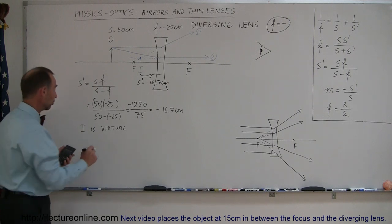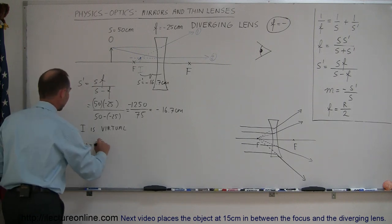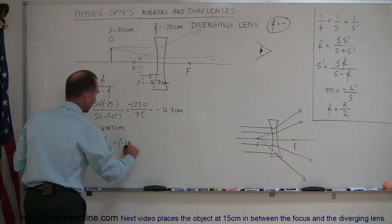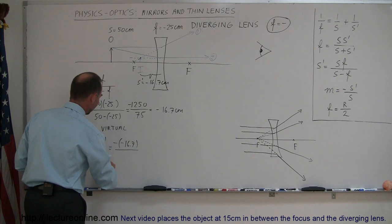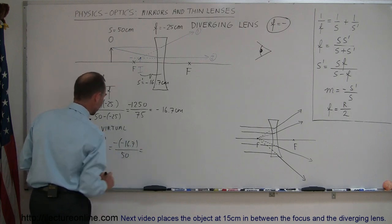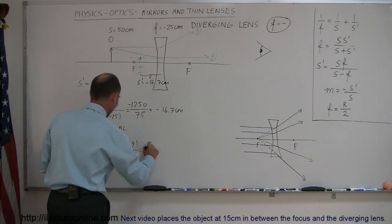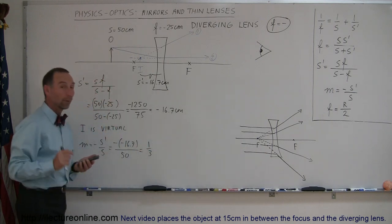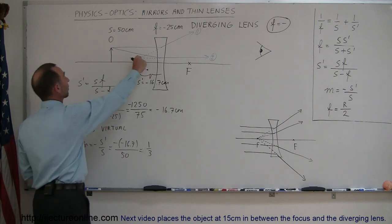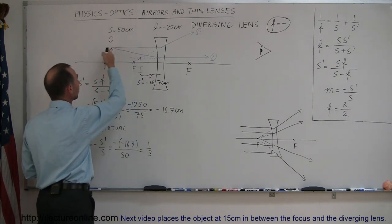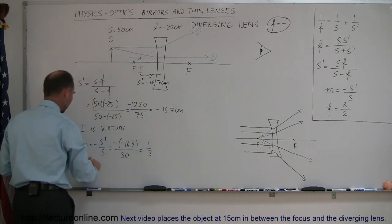Now the magnification M is equal to minus S prime over S, so it would be minus a minus 16.7 divided by S, which is 50, and that looks like it's about one-third. Yes it is, so that would be a positive one-third. One-third means that it's one-third the size of the object, and the fact that it's positive means that it's in the same orientation as the object, therefore it is upright.